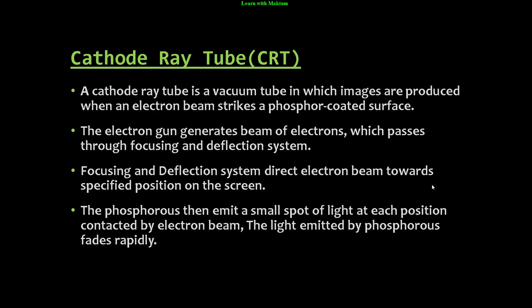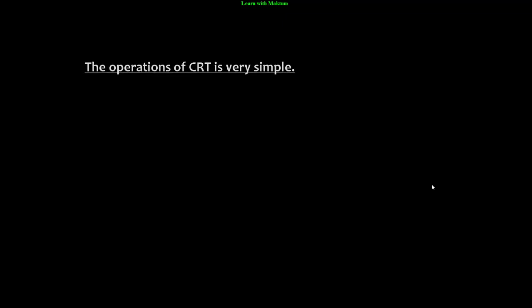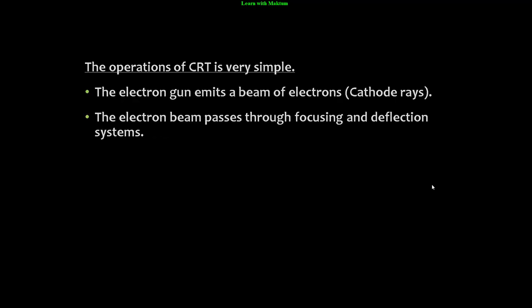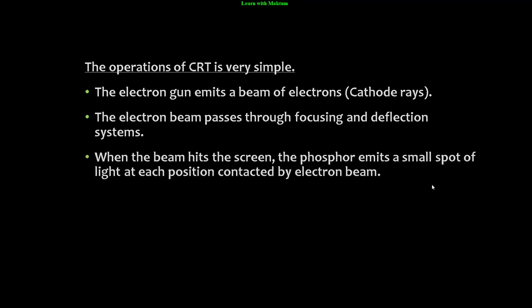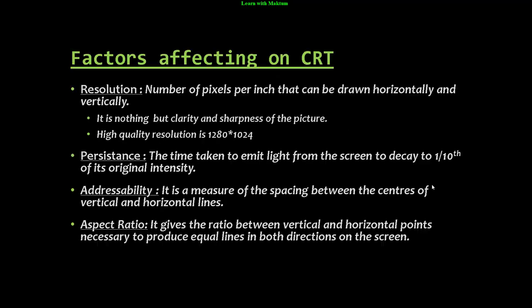The phosphorous then emits a small spot of light at each position contacted by the electron beam. The light emitted by phosphorous fades rapidly. The operation of CRT is very simple: first, the electron gun emits the beam of electrons, then the electron beam passes through the focusing and deflection systems. When this beam hits the screen, the phosphor emits a small spot of light at each position contacted by the electron beam, and that small spot of light fades rapidly.